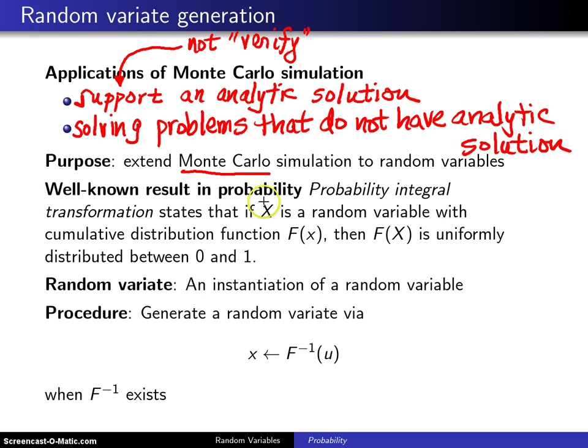Here's a well-known result in probability theory. It's known as the probability integral transformation, one of the top results in probability theory. It states that if X is a random variable with cumulative distribution function F(x), then F(X),